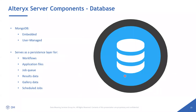Regarding the database, you have two options: the embedded one and the user-managed one. The embedded option is for a single-node environment. When you start scaling, the user-managed instance allows you to use replica sets in your MongoDB. Inside the datasets you have everything related to workflows, application files, job queues, results, and so on. You also have a usage report that takes all this data and transforms it into a dashboard — either inside the gallery or as a Tableau dashboard.